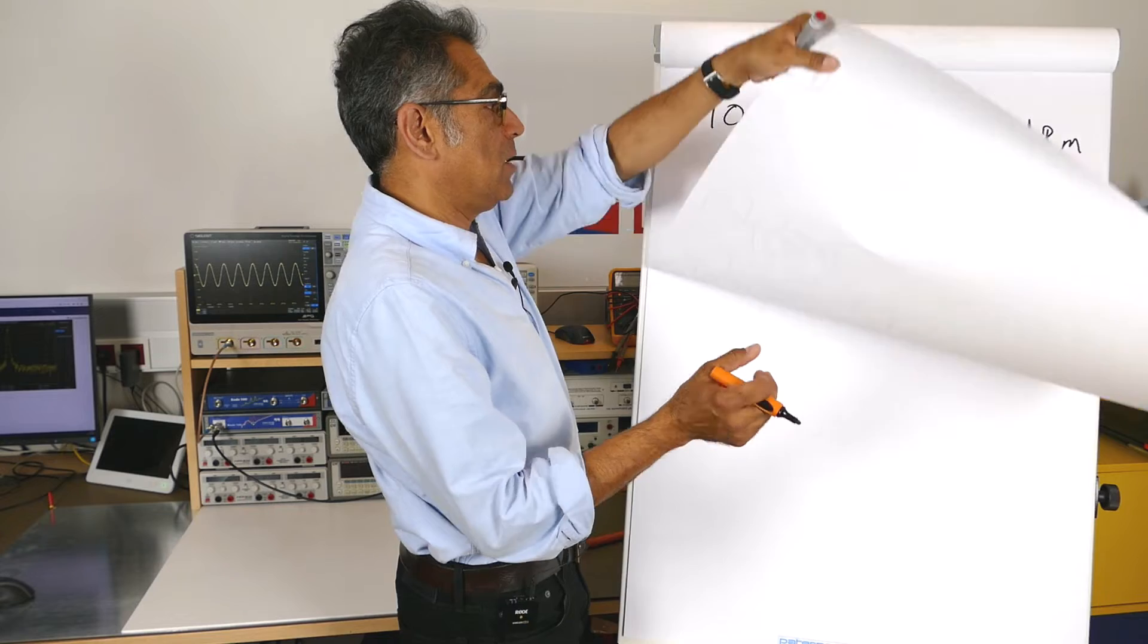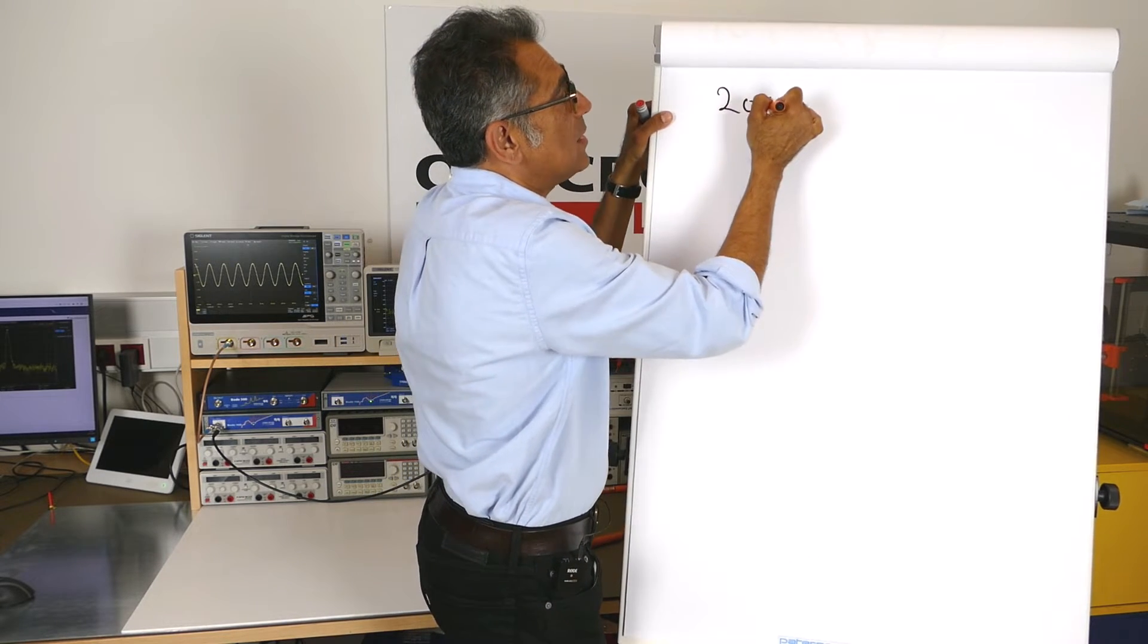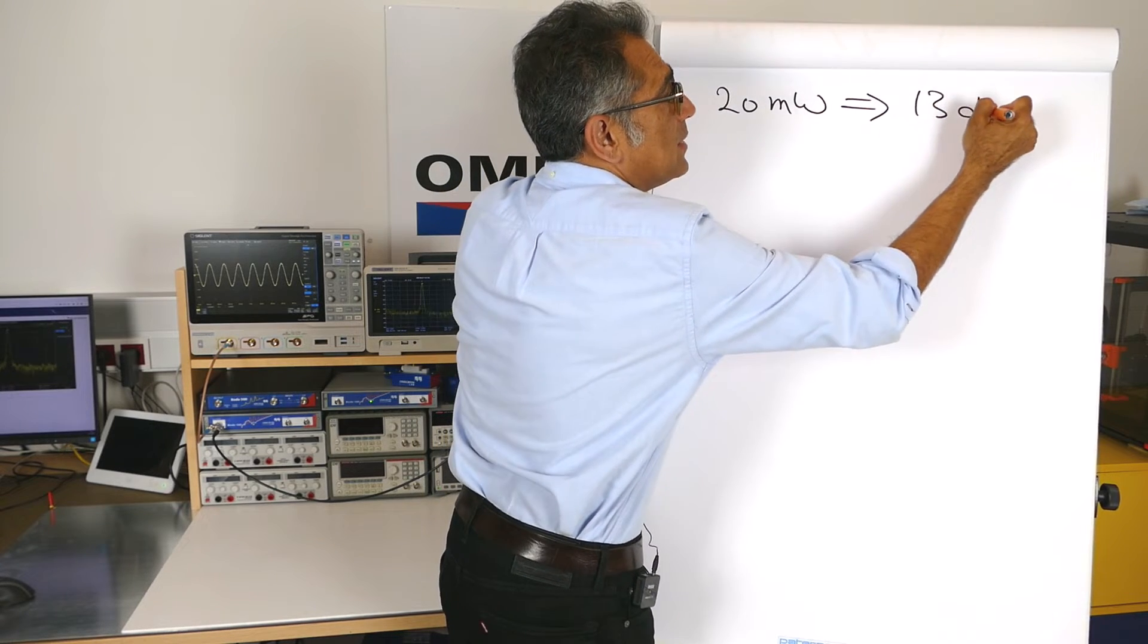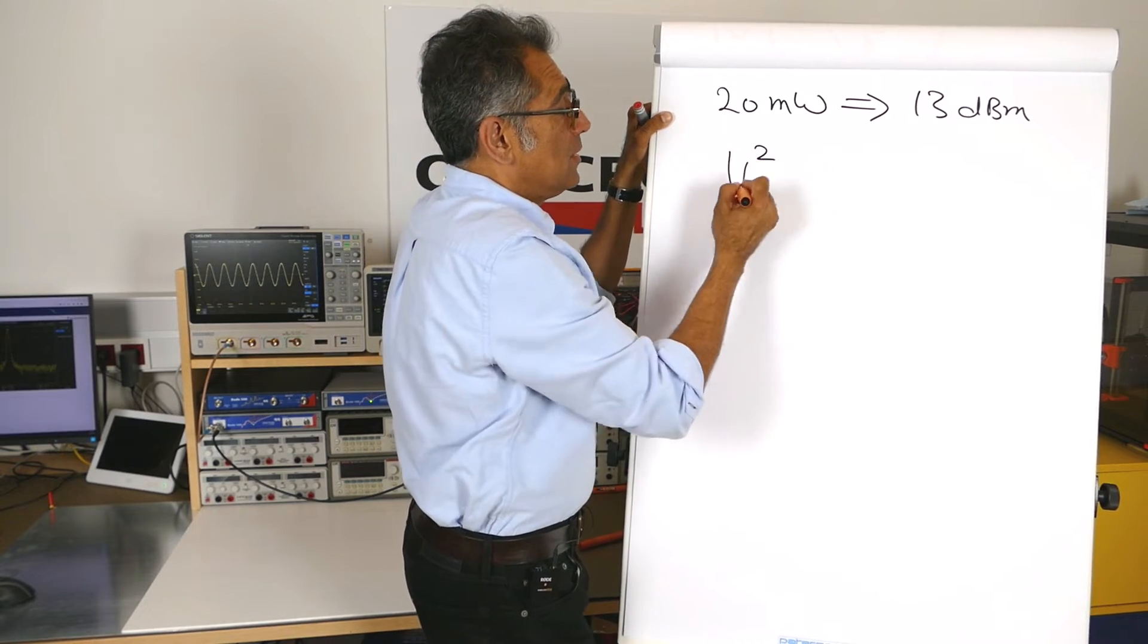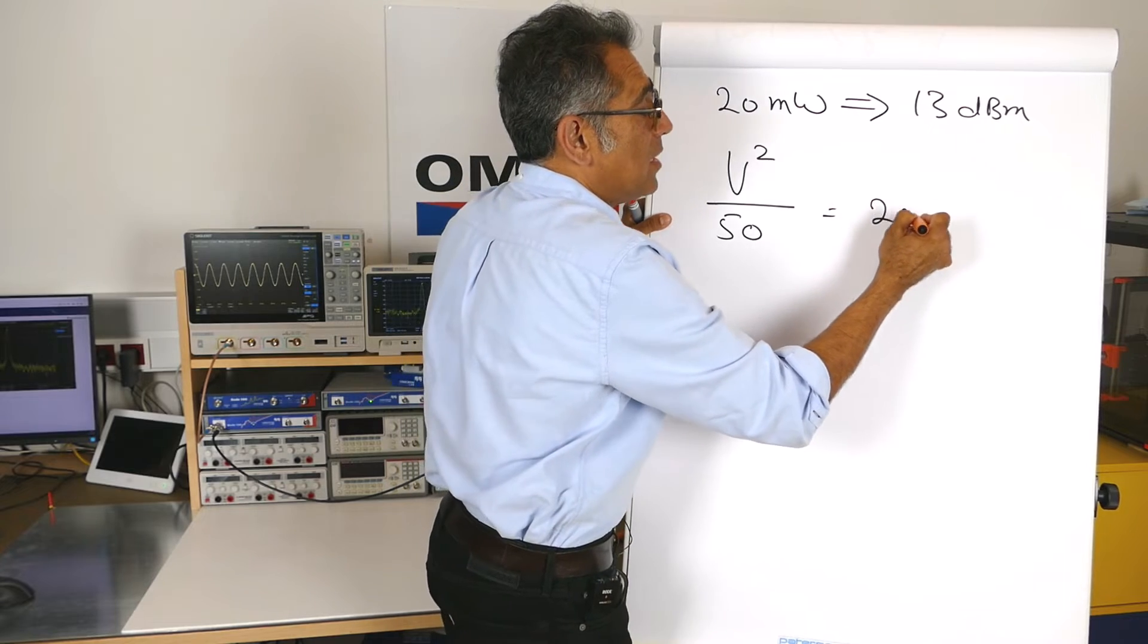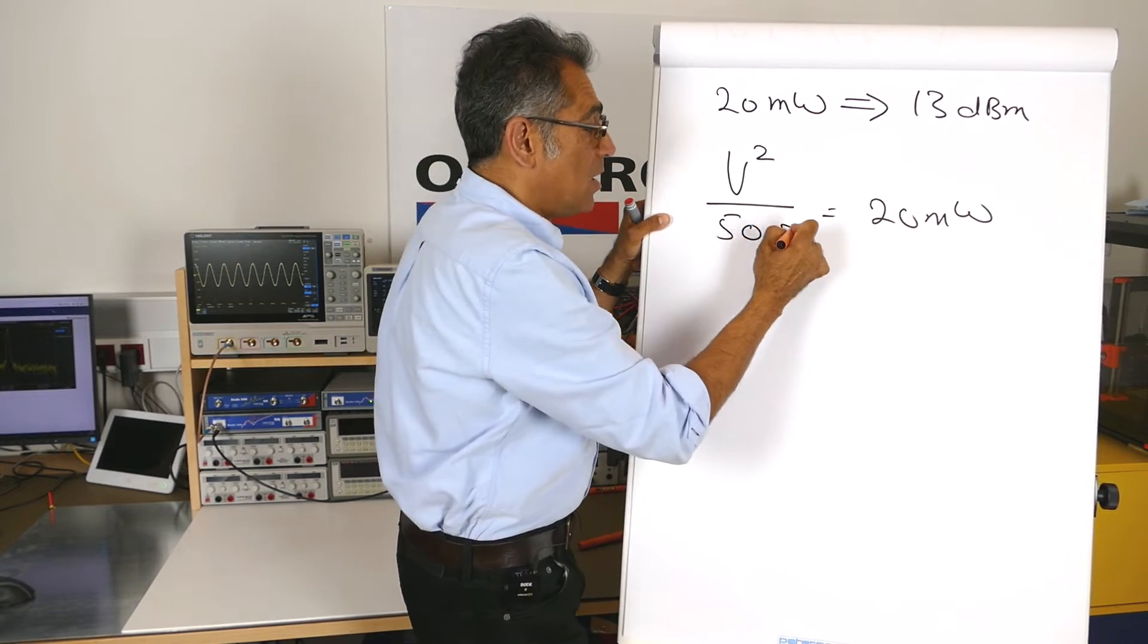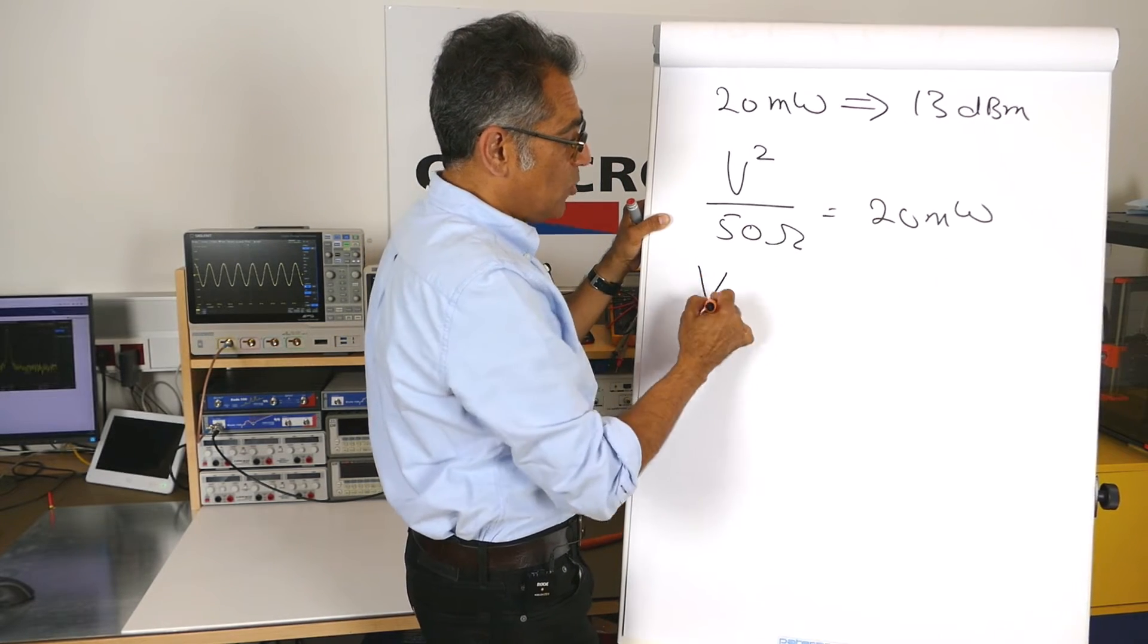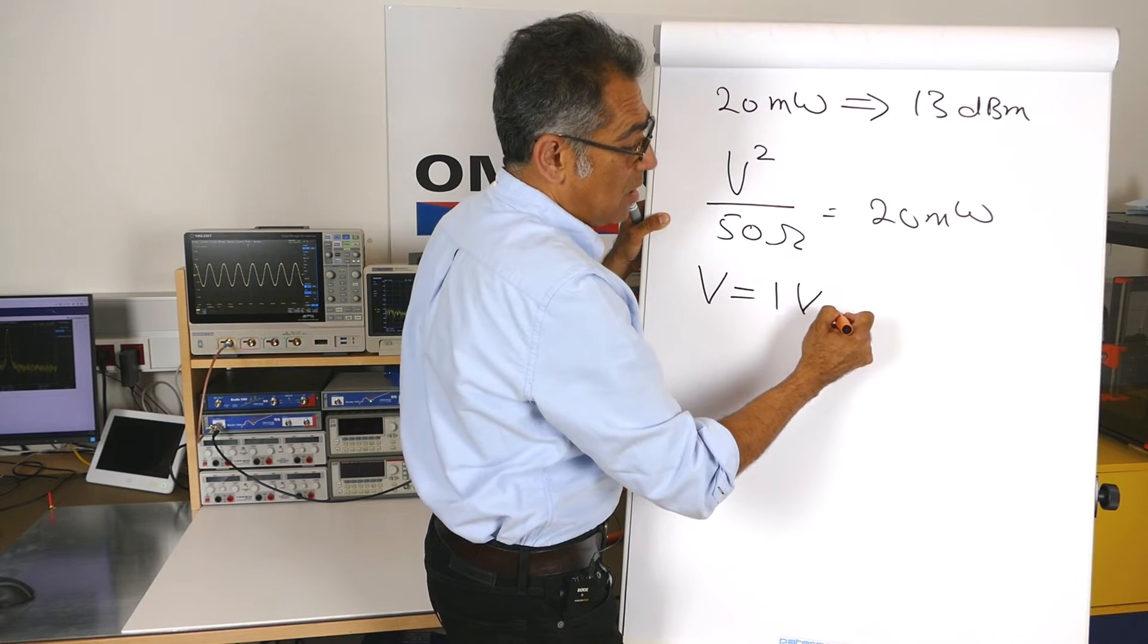And if you multiply that by that and square root it, you end up with a voltage of 1 volt RMS.